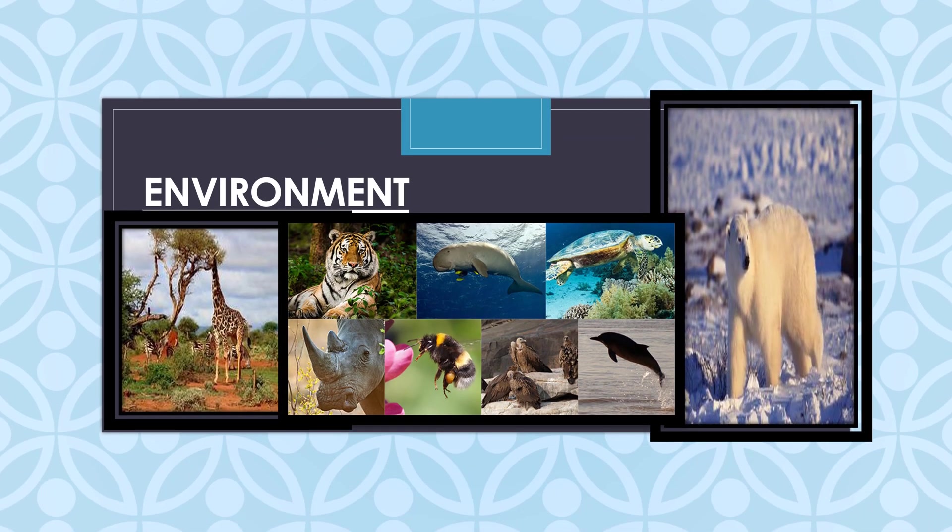Before knowing what is ecosystem, first let us know what is an environment. The word environment means surrounding. It refers to a variety of living and non-living things. For example, animals, plants and all the non-living things like mountains — air, water, soil, plants, animals, microorganisms — they all make up the environment.